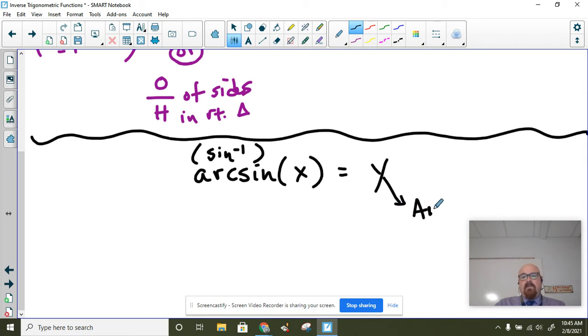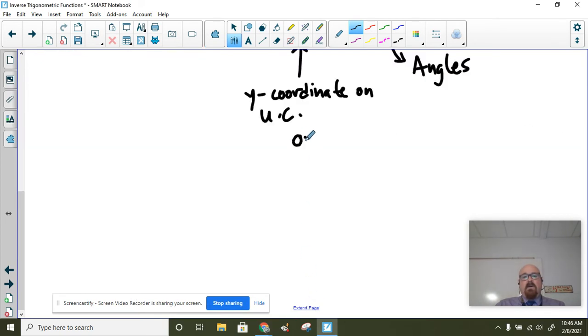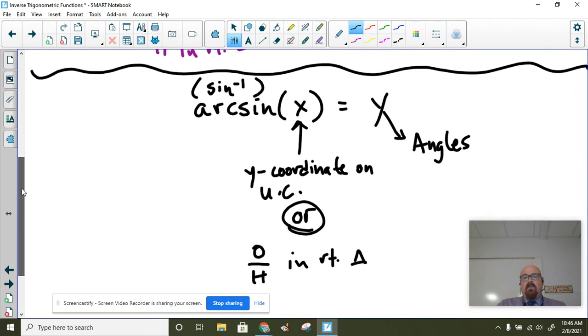So the outputs here are angles. The inputs are what we talked about up here. When you're doing an inverse sine function, even though I'm writing an x here, the number that's going in here is a y coordinate on the unit circle—again, with limitations to just those values that we know—or opposite over hypotenuse ratio in a right triangle. And you won't know which one of these you're supposed to do until you see what that output is.